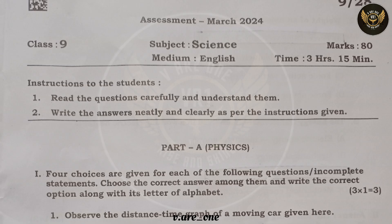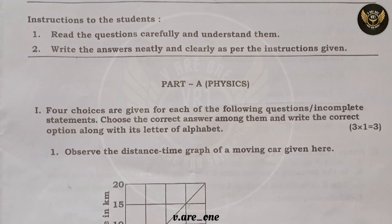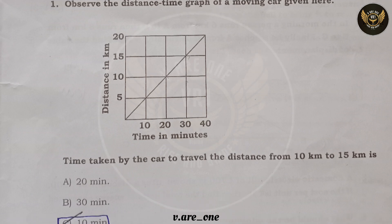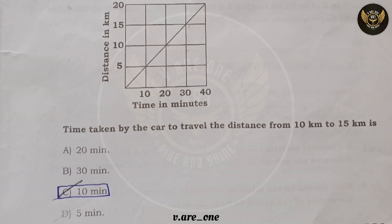Welcome to our YouTube channel. Today I'm going to explain the Class 9 Science paper. The first section has multiple choice questions. Question one: by seeing the distance-time graph, you have to write the time taken by the car to travel from 10 kilometers to 15 kilometers. The answer is option C.